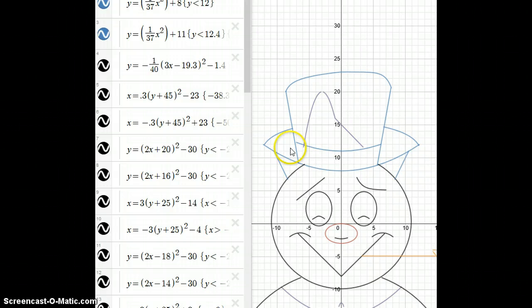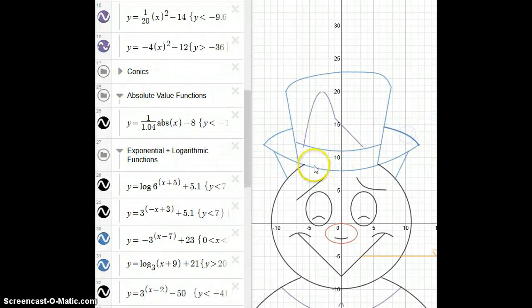Next, I used domain restrictions to prevent the lines from going past these boundaries here. For these parts here, I used logarithmic functions because I did not want it to be horizontally symmetrical, but I still wanted the curvature and it to be on the diagonal.